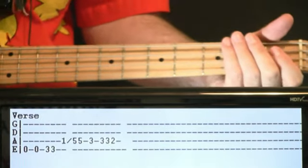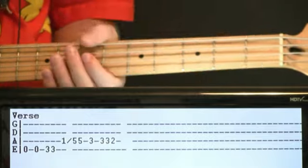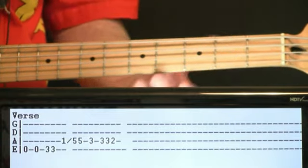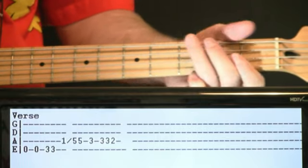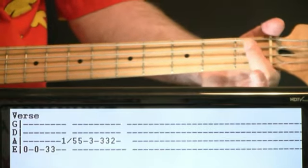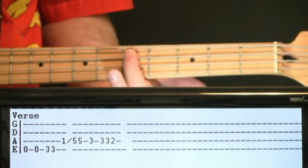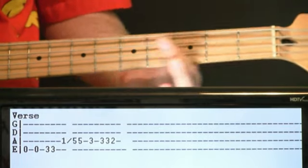Verse section. Hit the open low E, hold a moment, once more, a couple threes on the low E.